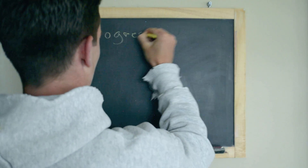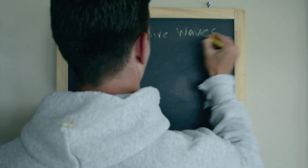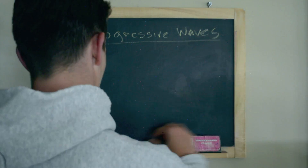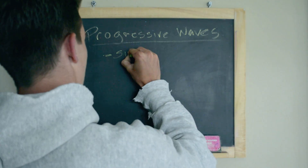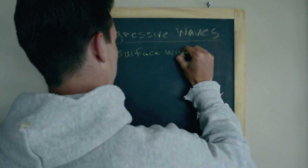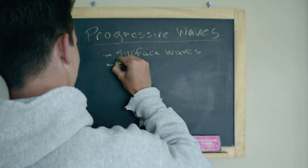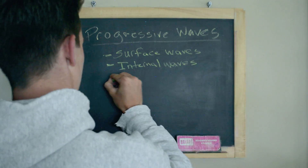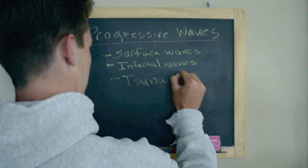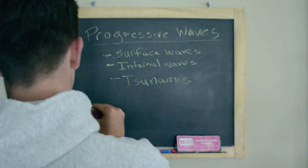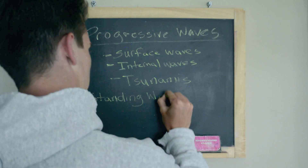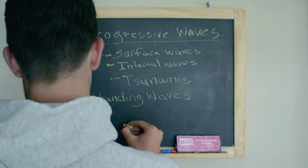There are two types of general wave categories. The first one is progressive waves, and there are three types of progressive waves: surface, internal, and tsunamis. The last type of general waves are standing waves, and they are seiches.